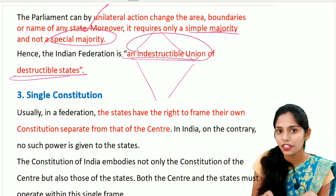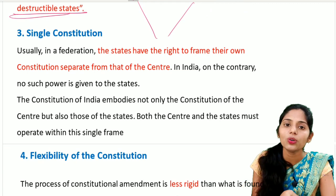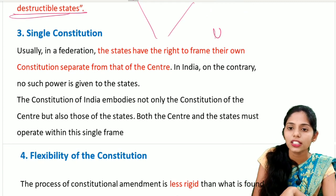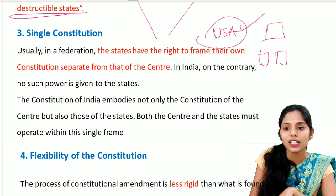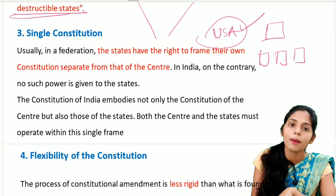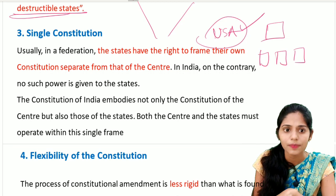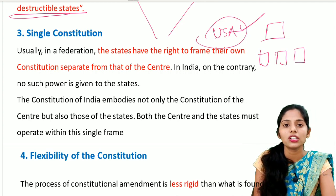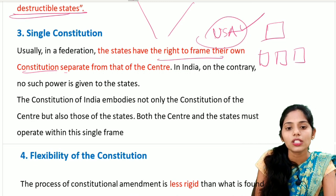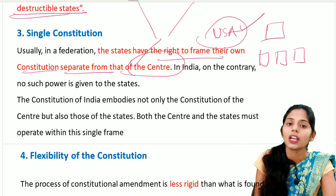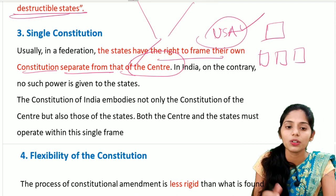The third unitary feature is a single Constitution. In other federations like the USA, each state has its own separate constitution. But in India, there is only one single Constitution for the entire country. Usually in any federation, states have the right to frame their own constitution, but India does not give this power to states.